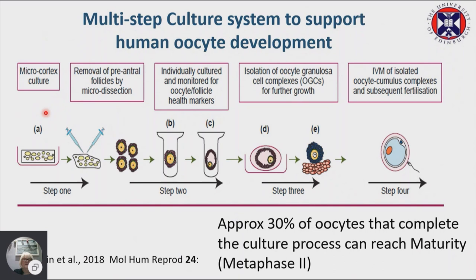Essentially, we have this multi-step culture system: starting with pieces of ovarian cortex prepared to promote activation of primordial follicles, then isolating pre-antral follicles and growing them individually, achieving antral formation, removing the oocyte granulosa cells, and getting these oocytes to mature. Of all the oocytes that survive to the end, about 30% can complete the system to metaphase 2.